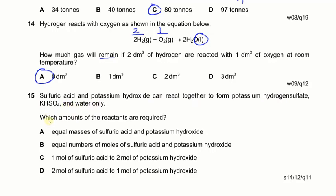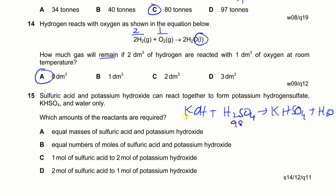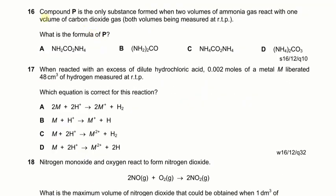Next: sulfuric acid and potassium hydroxide react to form potassium hydrogen sulfate and water only. Which amounts of reactants are required? The equation is KOH + H₂SO₄ → KHSO₄ + H₂O. The molecular mass of H₂SO₄ is 98 and KOH is 56, so equal masses are not needed. However, the mole ratio is 1:1, so equal moles of H₂SO₄ and KOH are required. Option B is correct. Options C and D (1 mole requiring 2 moles, or 2 moles requiring 1 mole) are wrong.